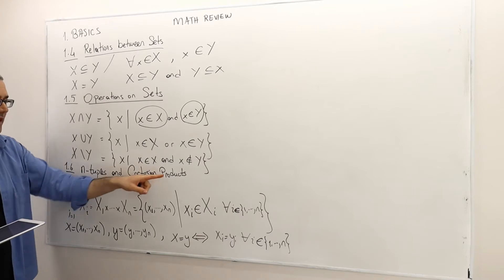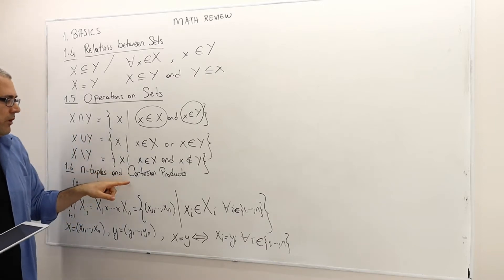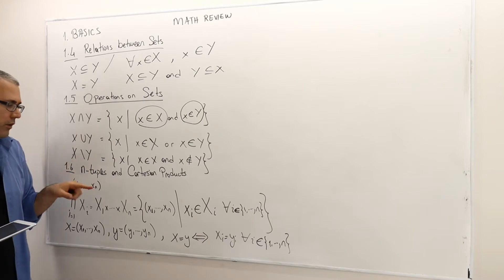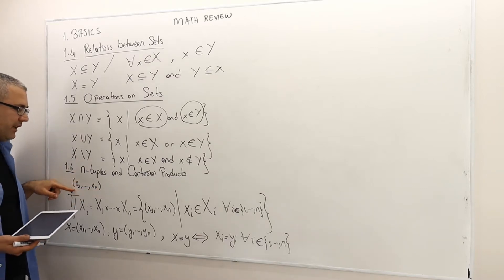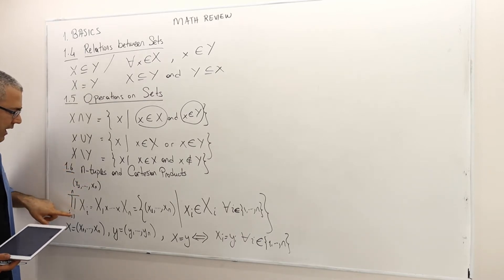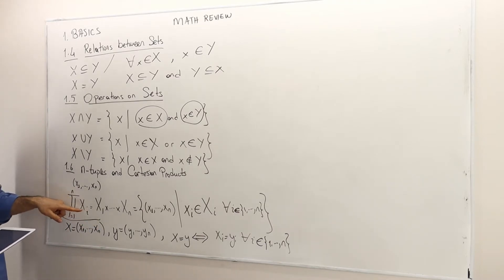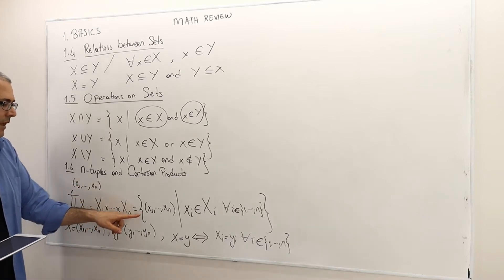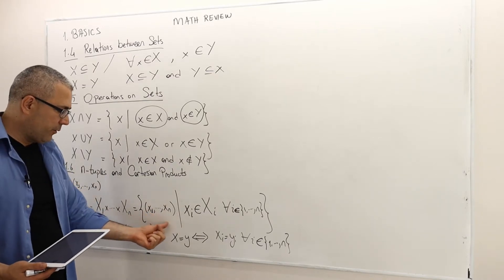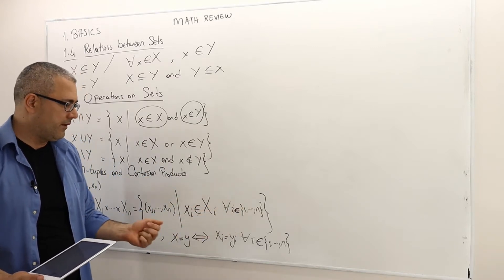Next, n-tuples and Cartesian products. When we multiply non-empty sets, we get n-tuples. If we multiply n sets, we get an n-tuple — basically a vector where each component is an element from the corresponding set. A Cartesian product of n sets X1, X2, up to Xn is an n-tuple such that each small xi comes from capital Xi for every i from 1 to n.